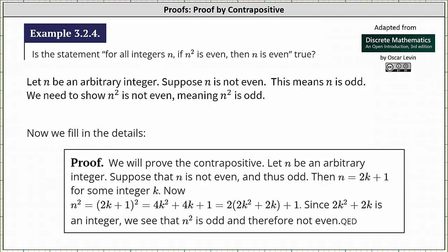The proof by contrapositive is complete, meaning we now know the original implication is true: for all integers n, if n² is even, then n is even. I hope you found this helpful.